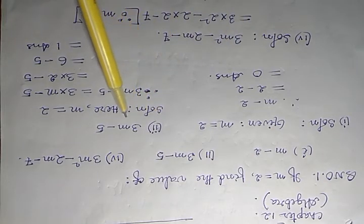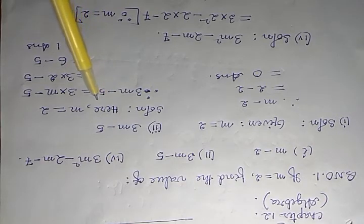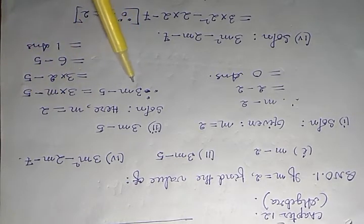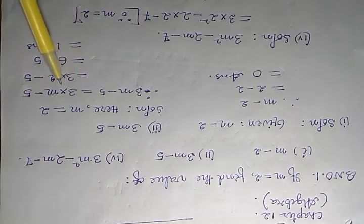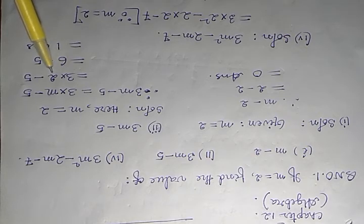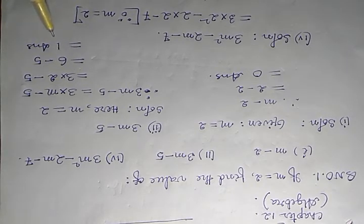Roma number 2 — thrice m minus 5. Here m equals 2. Therefore, the given expression: thrice m minus 5 equals 3 into m minus 5 equals 3 into 2, substituting the value of m, minus 5 equals 6 minus 5 equals 1. This is the answer.